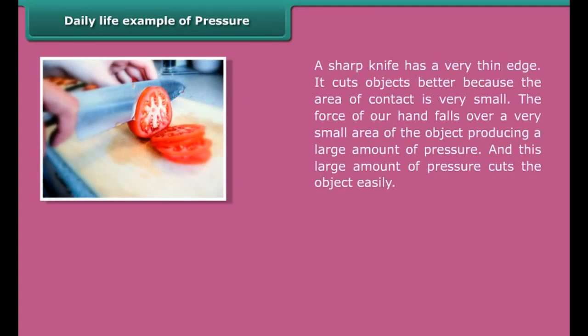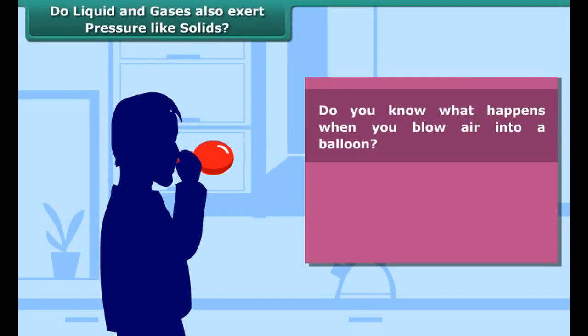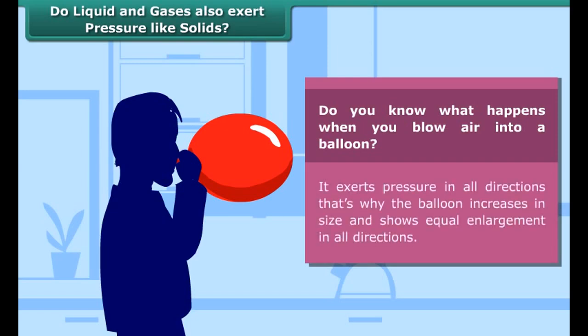Daily life example of pressure: Have you ever noticed that why school bags have wide straps? Why sharp knife cuts better as compared to blunt knife? And why the tip of the needle is sharp? In our everyday life, we all experience the impact of pressure. A school bag has wide straps so that the weight of the bag may fall over a large area of the shoulders of the child, thus resulting in less pressure on the shoulders, and due to less pressure it is quite comfortable to carry the heavy school bag.